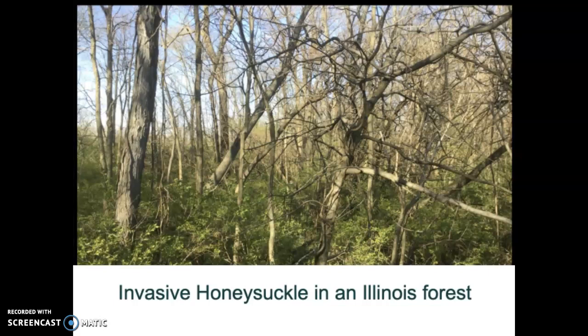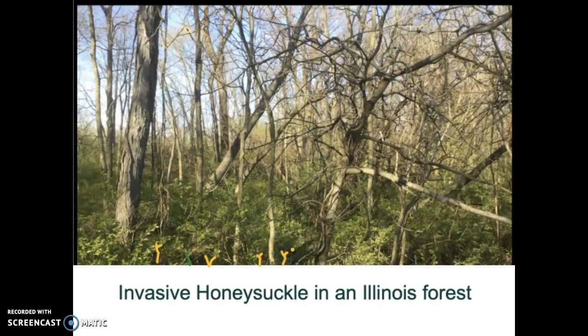When honeysuckle germinates and leafs out in early spring, none of the native plants are ready. Your oak trees, hickories, maples — those little seedlings aren't ready to germinate in February or March when honeysuckle can start. So those seeds are sitting dormant and waiting, while the honeysuckle grows over the top of them. By April when the oak says it's warm enough to germinate, it sticks its head out of the soil and it's already in the shade — it can't survive and it dies. The new generation of oaks, maples, hickories, and all native plants don't have a chance to germinate and survive.